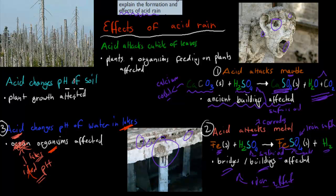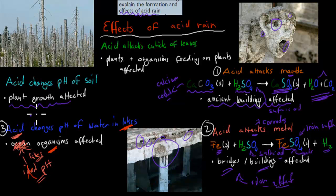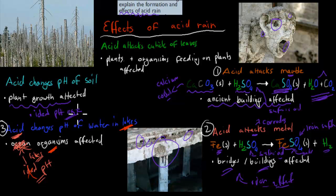Acid also changes the pH of soil, making it lower. Plants have an ideal pH range for the soil in order to grow properly. For example, some apple trees might want a pH of 6, and if acid rain lowers that pH, the apple trees can't grow anymore. So it affects the growth of plants.